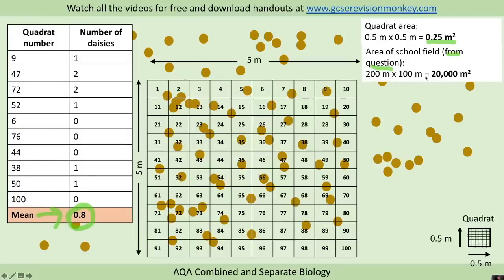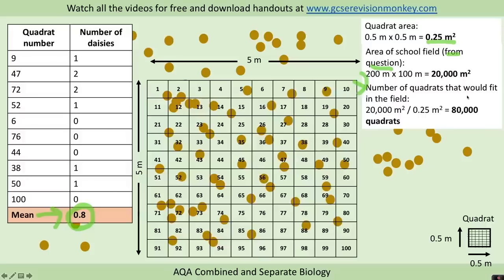The next thing you need to work out is the number of quadrats that would fit in the field. We've got the area of our field divided by the area of one quadrat, and that gives us 80,000 quadrats.